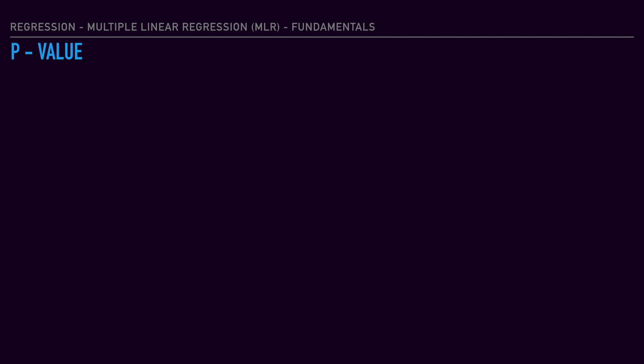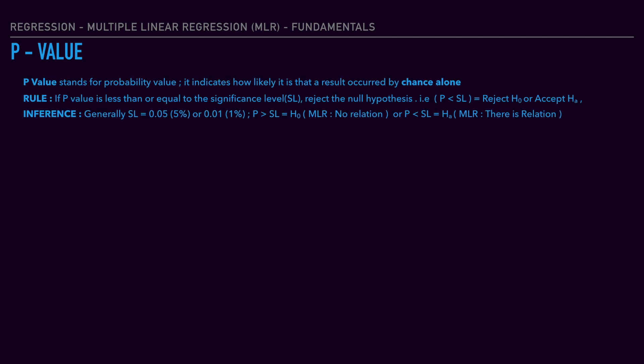P stands for probability value. It indicates how likely a result will occur by chance alone. First, we will talk about the thumb rule. You will get new terminologies, and we will talk about that explanation later on in this session.